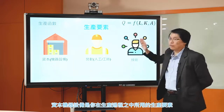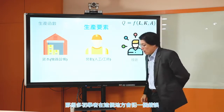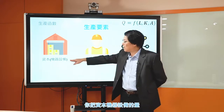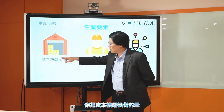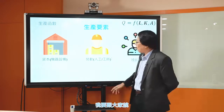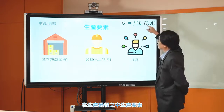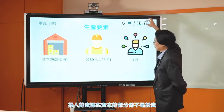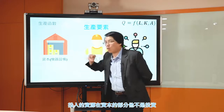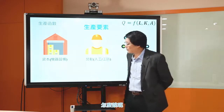生產要素有分勞動、資本跟技術，接下來我們就來細講這三個東西的細節。首先討論資本，資本是什麼呢？資本是機器設備，是你在生產過程中所用到的生產要素也就是投入。很多初學者在這個地方會犯一個錯誤，就是把資本這個機器設備的量跟投資混在一起。